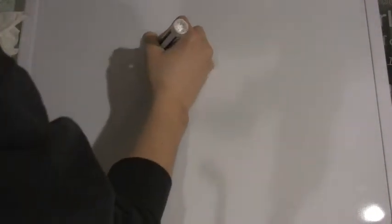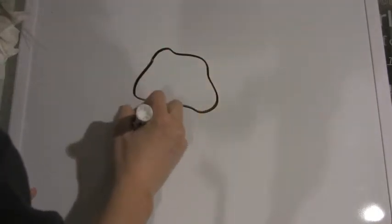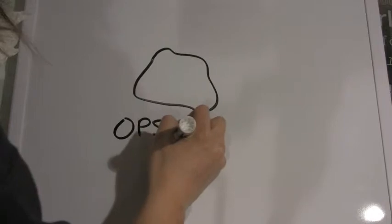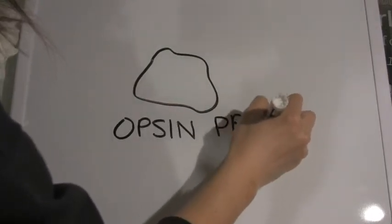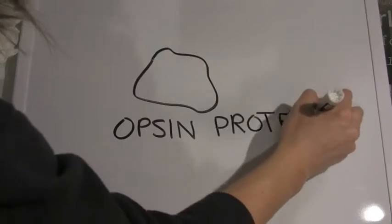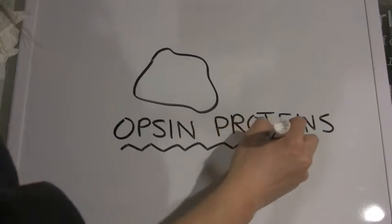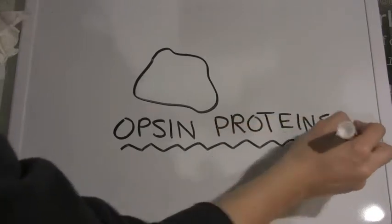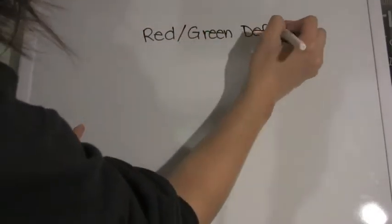However, if you had nothing but retinol in your cones, you would only be able to see shades of gray, because this reaction would only occur at about 500 nanometers. This is when the opsin proteins come in. In your cones, opsin proteins envelop retinol, changing its chemical environment. Opsin proteins change the amount of energy required for the reaction to occur, allowing the detection of color.